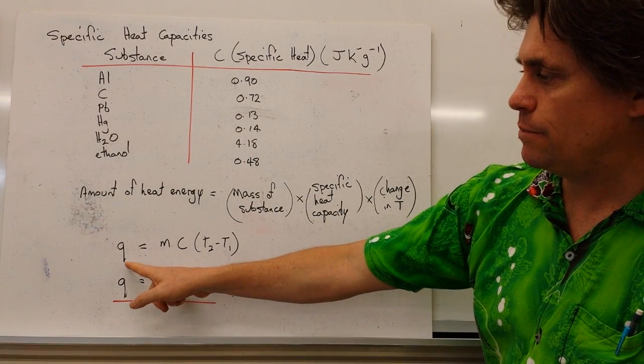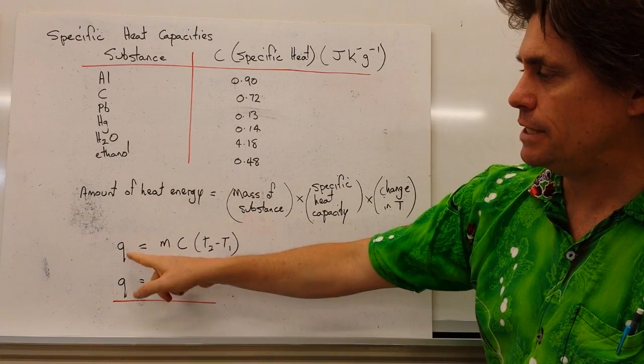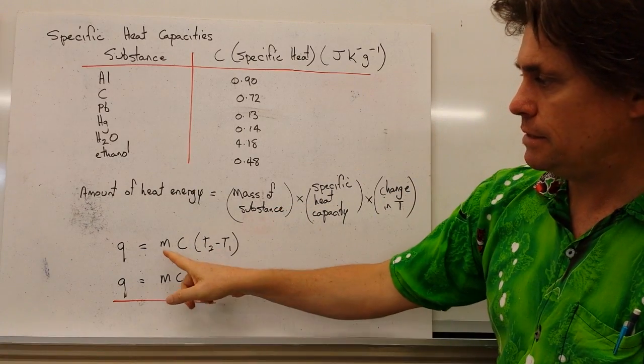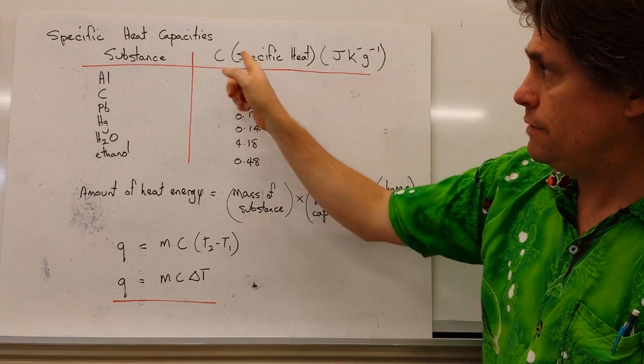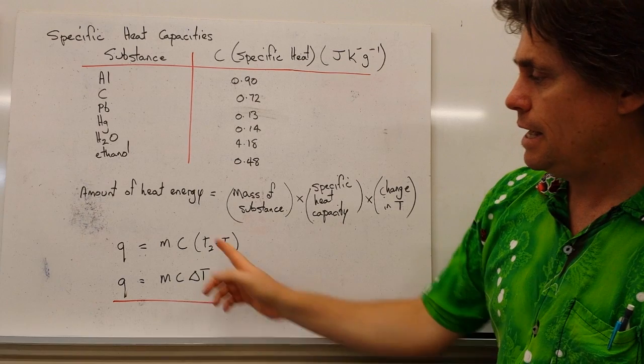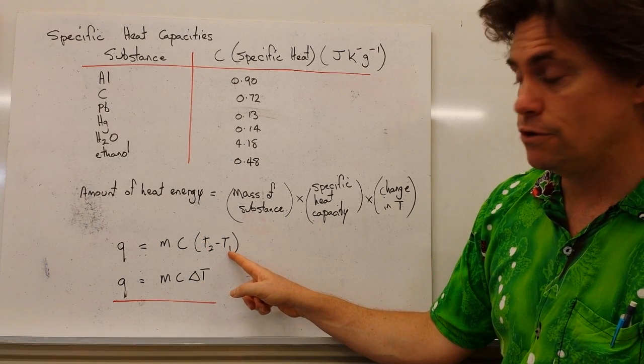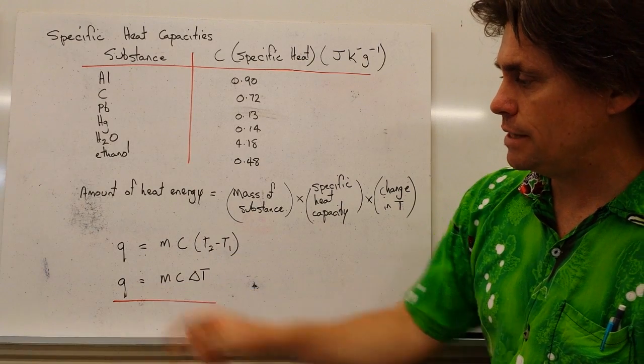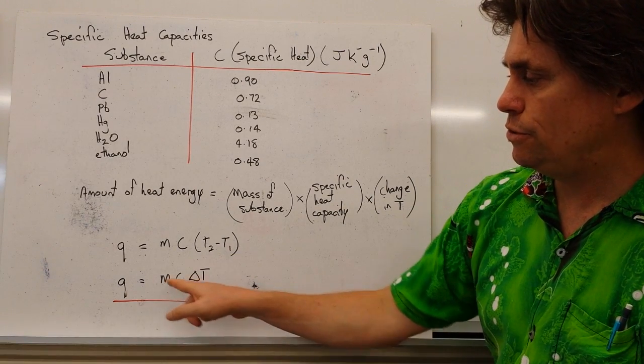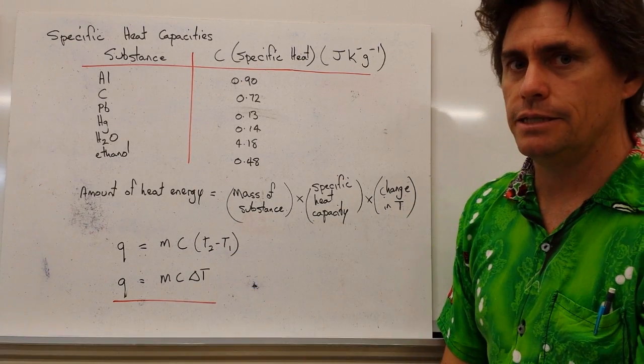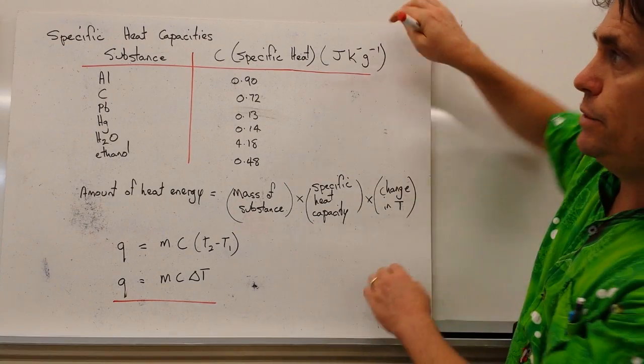So we can shorten this and we denote the amount of heat energy as Q, our mass of the substance is M, our C from our specific heat capacity, and the change in temperature will always be the second temperature minus the first temperature. And we can write that a little bit shorter as Q equals MC delta T. So let's see how we use it.